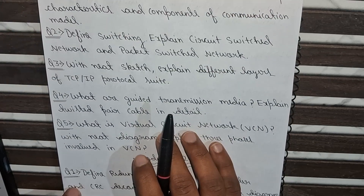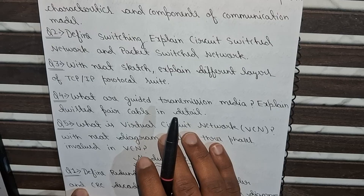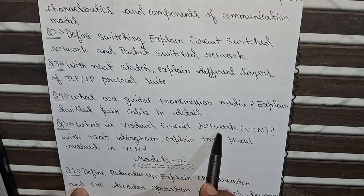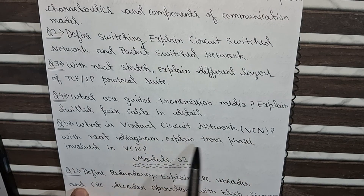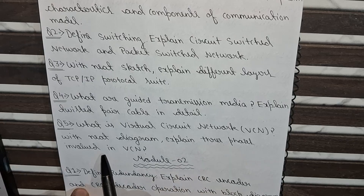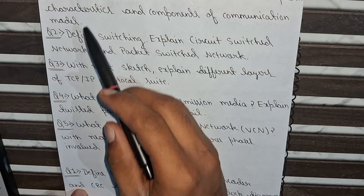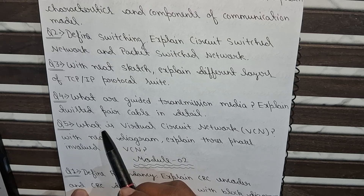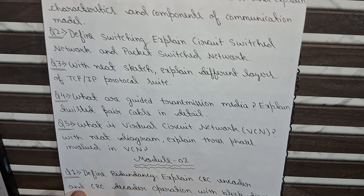The fifth and last question from Module 1 is: What is a Virtual Circuit Network (VCN)? With a neat diagram, explain the phases involved in VCN. From the above 5 questions, you need to complete at least 4 questions from Module 1.